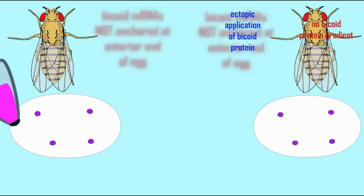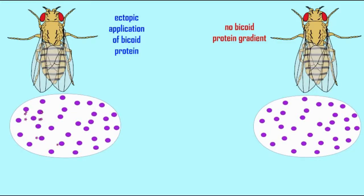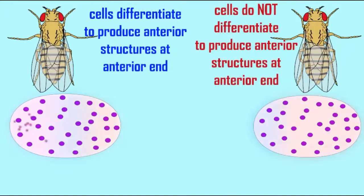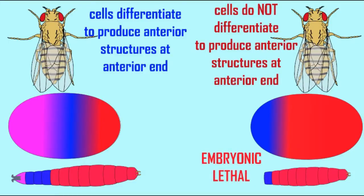However, if bicoid is applied ectopically at the anterior pole, this can rescue the larvae — it can develop normally simply because a bicoid protein gradient was established. This demonstrates that not only is bicoid required to form anterior structures, it is sufficient: bicoid expression alone can rescue embryos that otherwise would not have formed anterior head structures.